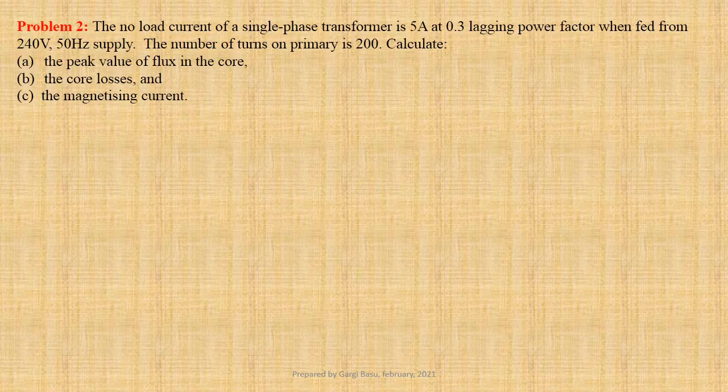Problem number 2: The no load current of a single-phase transformer is 5 Ampere at 0.3 power factor lagging. The number of turns on primary is 200. We have to calculate the peak value of flux in the core, the core losses, and the magnetizing current.